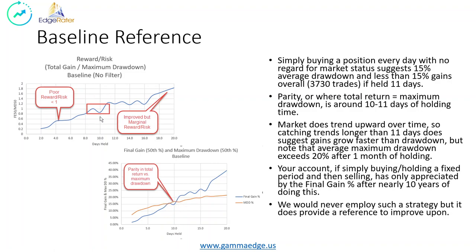The next chart shows real gains and drawdown. Here's that same parity point at 10 days. The blue is the final portfolio gain as a function of days held. You can see your risk is much higher than the reward you'd get in your overall portfolio. Over the long period of time, you're not going to have much gain, and you're taking on substantial risk. The drawdown at around 20% would be alarming, especially without meaningful forward progress in overall gains.